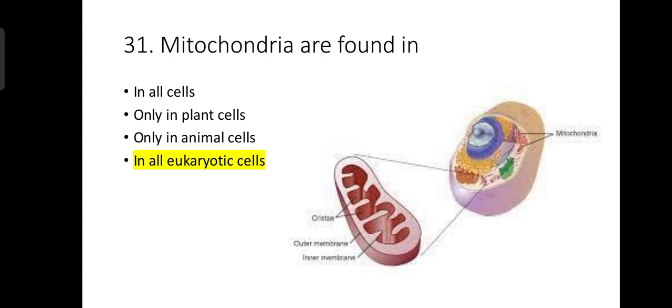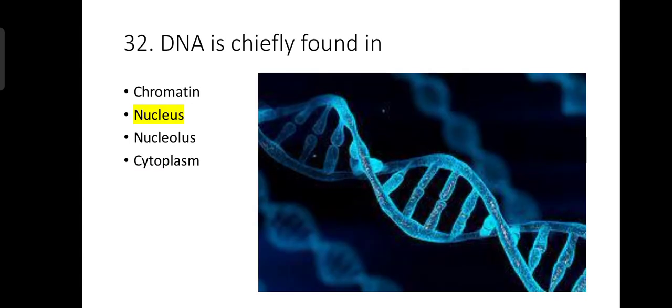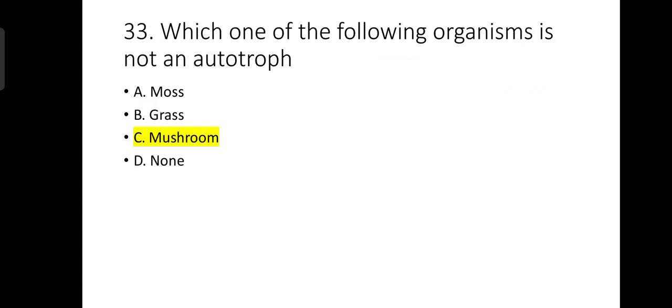Number 31: Mitochondria are found in all eukaryotic cells. Number 32: DNA is chiefly found in the nucleus. Number 33: Which of the following organisms is not an autotroph? Mushroom — all fungi are heterotrophs, so mushroom also belongs to fungi and is a heterotroph.